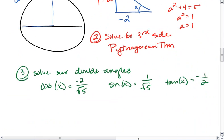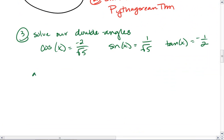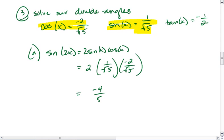We're going to plug these in to our double angle formulas. So sine of 2x is going to equal 2 sine x cosine x. We use our values up here. And we see that that's going to be 2 times 1 over root 5 times negative 2 over root 5, which equals negative 4 over 5. Next, we'll solve for cosine of 2x.